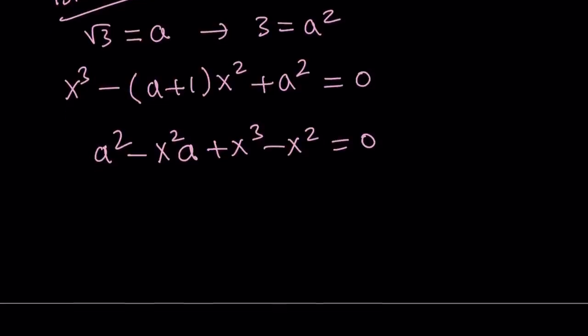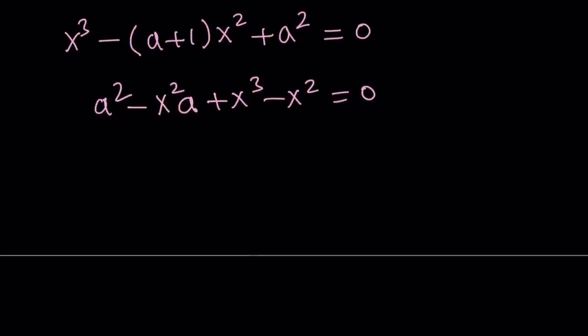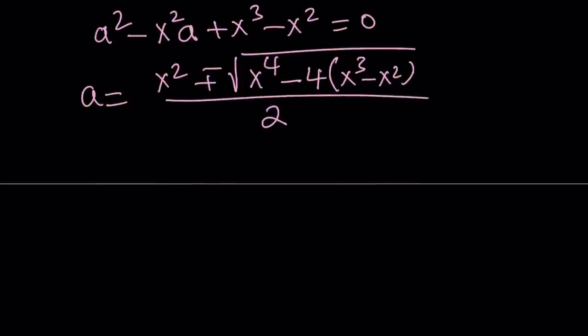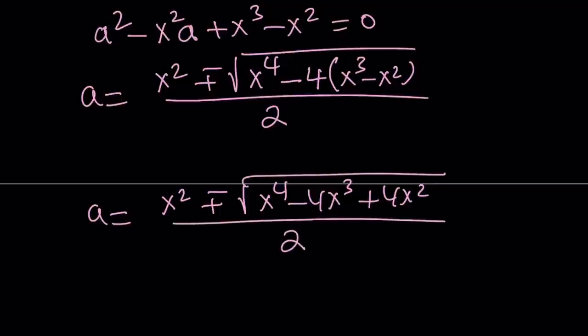I can write it as a squared and then I have minus x squared a and then I have plus x cubed minus x squared equals 0. Now this is a quadratic in a so we can solve it using the quadratic formula. A equals negative b plus minus the square root of b squared which is x to the fourth power minus 4ac. A is 1 so c is going to be x cubed minus x squared. And I'm going to divide it by 2 of course. Now let's go ahead and simplify this a little bit. If you expand you get x squared plus minus the square root of x to the fourth power minus 4x cubed plus 4x squared.